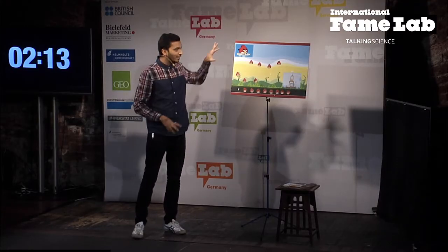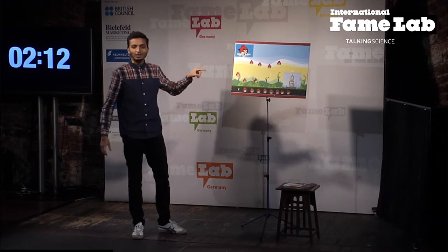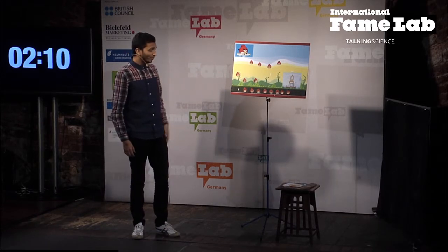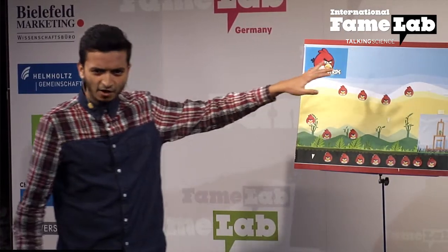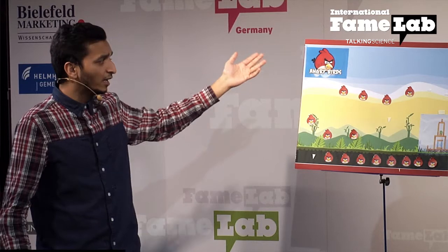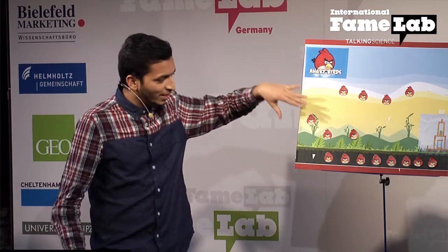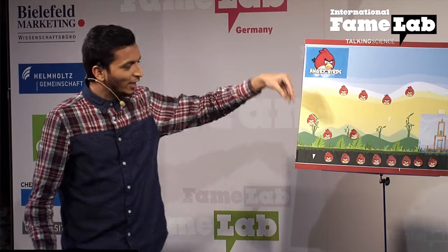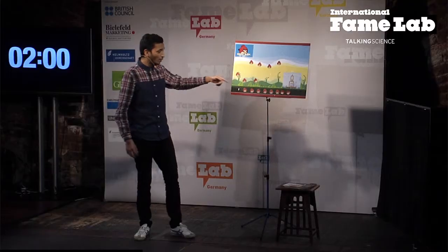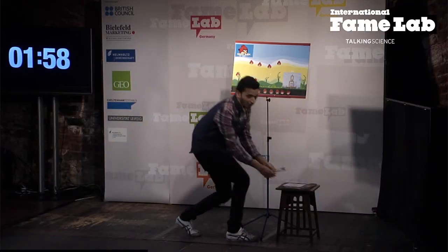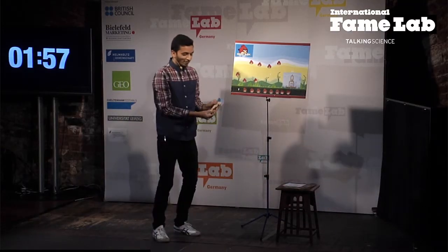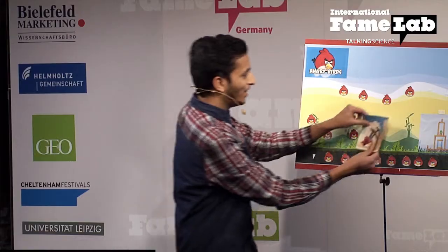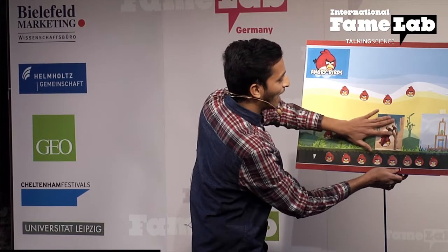Now, coming back to the cycling of carbon, or the Angry Birds here, they're flying all around in the air or in the atmosphere, and some of them sit on the plants. And from here, they go into the soil. And from soil, the microbes in the soil have this slingshot, and they throw the Angry Birds into the air. And this is the cycling of carbon.